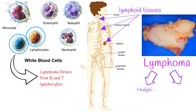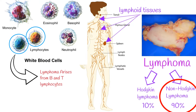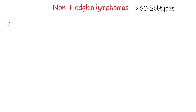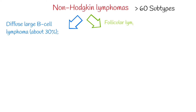Broadly, lymphoma is classified as Hodgkin lymphoma and non-Hodgkin lymphoma. 90% of lymphomas are non-Hodgkin lymphomas, and only 10% is Hodgkin lymphoma. Hodgkin lymphoma is more predictable, while non-Hodgkin lymphoma is less predictable because it has many subtypes with various prognoses. The most common subtypes of non-Hodgkin lymphomas are diffuse large B-cell lymphoma at about 30%, and follicular lymphoma at about 20%. All other non-Hodgkin subtypes have a frequency of less than 10%.